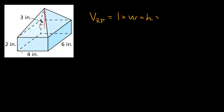Here the length is 4, the width is 6, and the height is 2. So we're going to have 4 times 6 times 2. 4 times 6 is 24, and 24 times 2 is 48. So that's the volume of this rectangular prism down here.